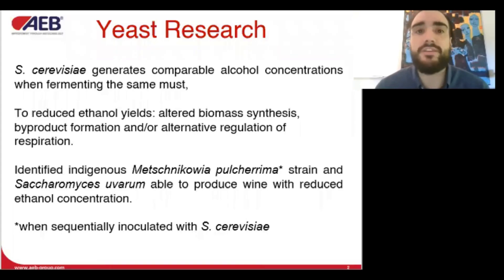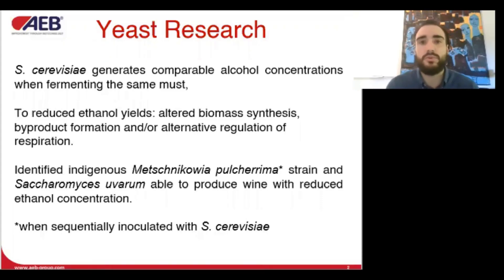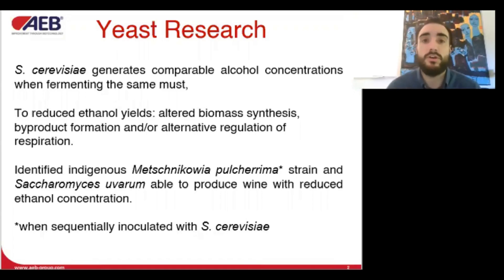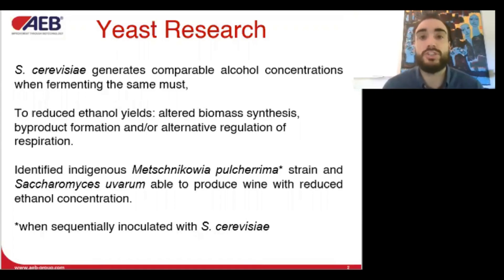Saccharomyces cerevisiae is very efficient in producing ethanol. And even if the strains that we use are different, they generate comparable amounts of alcohol fermenting the same must. To reduce the ethanol yields, you have to redirect their metabolism towards biomass production or other secondary metabolites. Therefore, research has focused on generating new Saccharomyces strains or isolating non-conventional yeast.